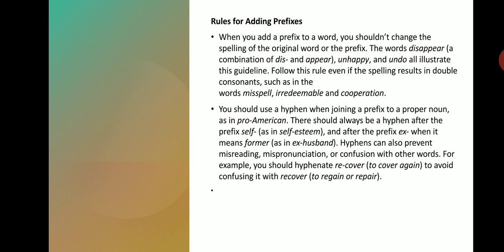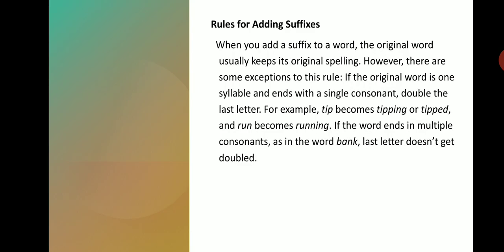There are certain rules for adding suffixes. When you add a suffix to a word, the original word usually keeps its original spelling. However, there are some exceptions. If the original word is one syllable and ends in a single consonant, double the last letter. For example, 'tip' becomes 'tipping,' and 'run' becomes 'running.' If the word ends in multiple consonants, as in 'bank,' the last letter does not get doubled.